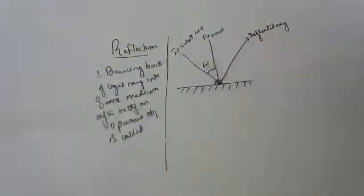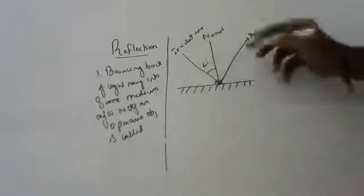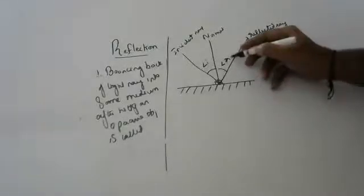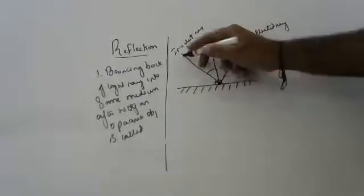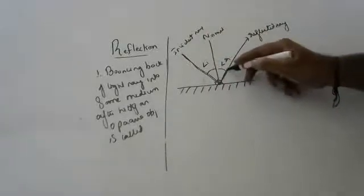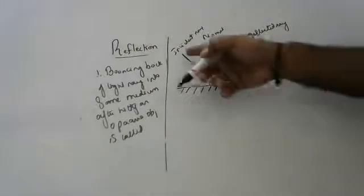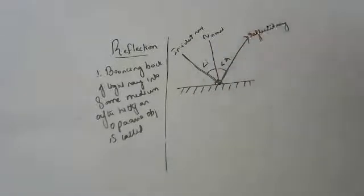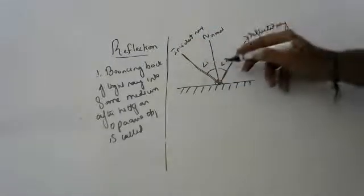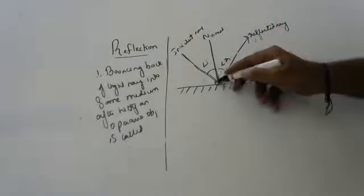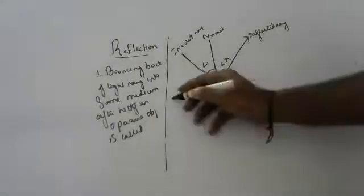The normal is a perpendicular line at the point where the light hits the surface — it is an imaginary line at 90 degrees. The angle between the incident ray and the normal is called the angle of incidence. The angle between the normal and the reflected ray is called the angle of reflection.